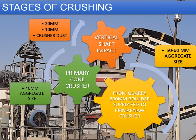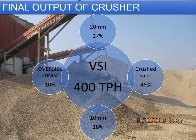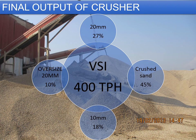Regarding the final output of the crusher: the VSI has a design capacity of 400 tph but typically works at around 80% efficiency, giving a working capacity of around 320 to 330 tph. Out of that working capacity, you generally get about 10% oversize, approximately 27% of 20 mm aggregate, around 45% crusher dust, and approximately 18% of 10 mm aggregate.